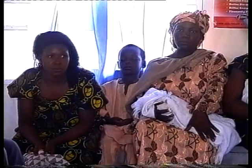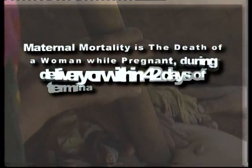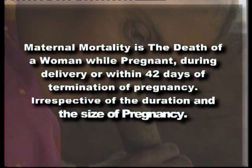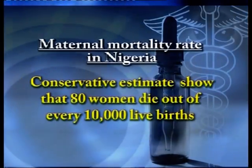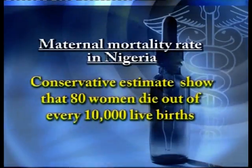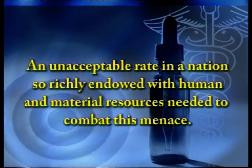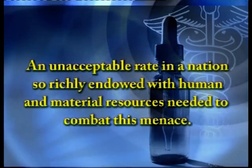Maternal mortality is a major contributor to the high number of deaths occurring among women in Nigeria. It is defined as the death of a woman while pregnant, during delivery, or within 42 days — that is, six weeks — of termination of pregnancy, irrespective of the duration and site of pregnancy. Conservative estimates show that 80 women die out of every 10,000 live births in this country, an unacceptable rate in a nation so richly endowed with human and material resources needed to combat this menace.